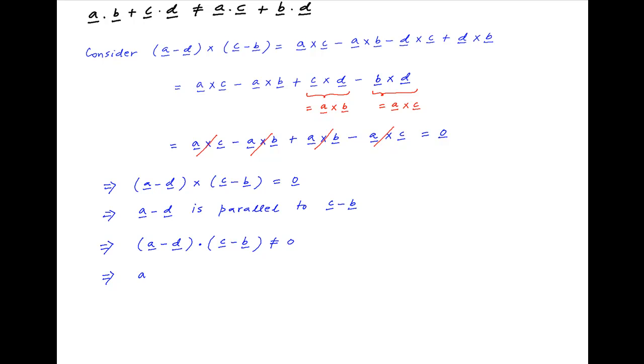Opening up the left hand side, we get a dot c minus a dot b minus d dot c plus d dot b is not equal to zero. This can be rearranged as a dot b plus c dot d is not equal to a dot c plus b dot d.